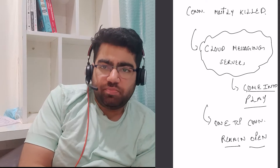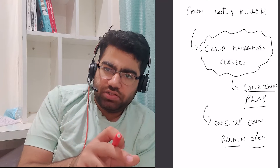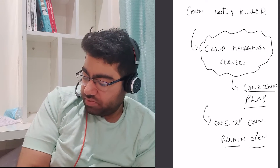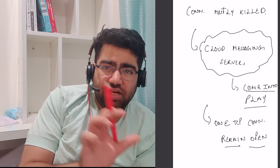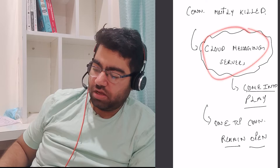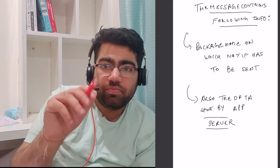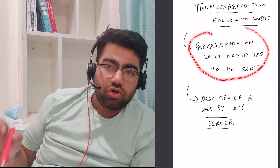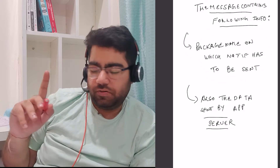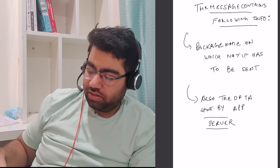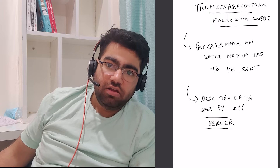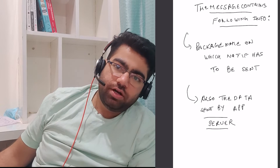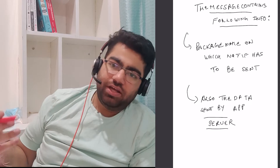That is when cloud messaging servers come into place. What these servers do is maintain just one TCP connection open on your mobile at all times. Various notifications come through this single connection. Whenever an app has to send a notification, it makes a call to the cloud messaging server, which then pushes that notification to your device through this single open connection. The call contains the package name — identifying which application the notification belongs to, like Uber, Swiggy, or Zomato — along with the notification data.